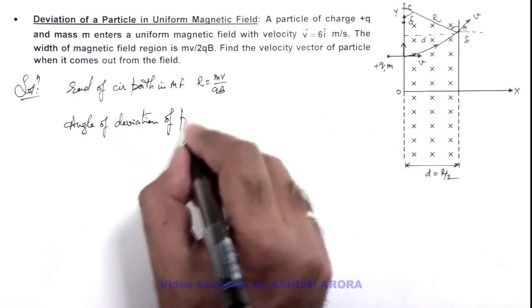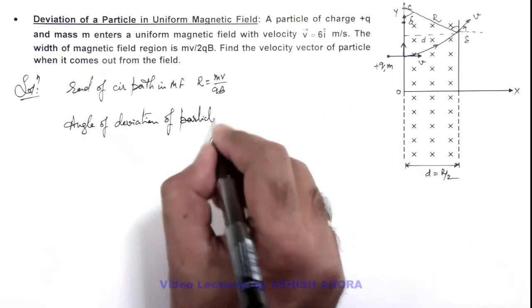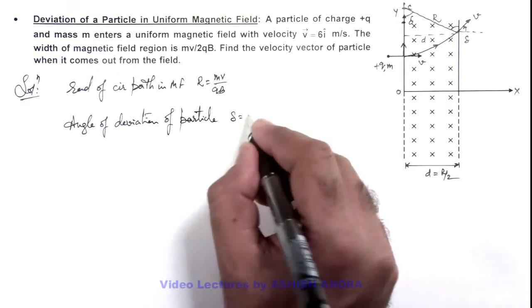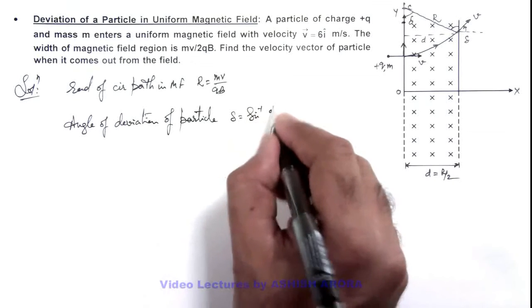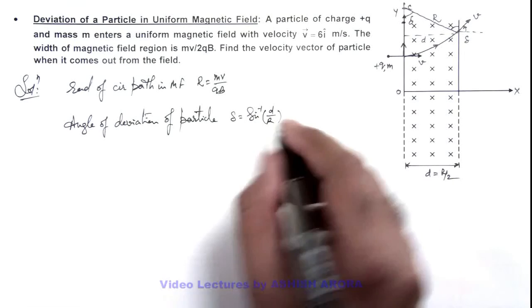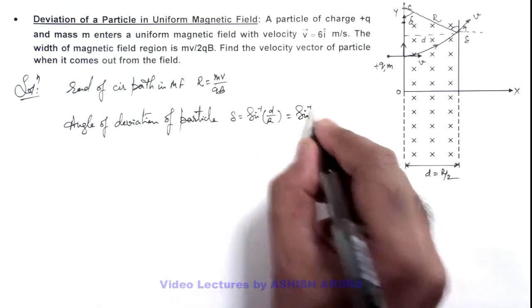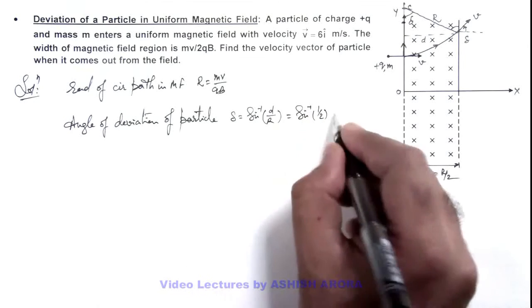The angle of deviation of the particle due to this sector of magnetic field is δ which can be written as sin⁻¹(d/r). As d is r/2, this is sin⁻¹(1/2), which is 30 degrees.